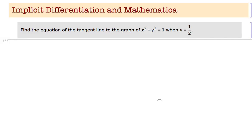I'm going to show you how to use Mathematica to solve this problem. We want to find the equation of the tangent line to the graph of x squared plus y squared equals 1 when x equals one half.